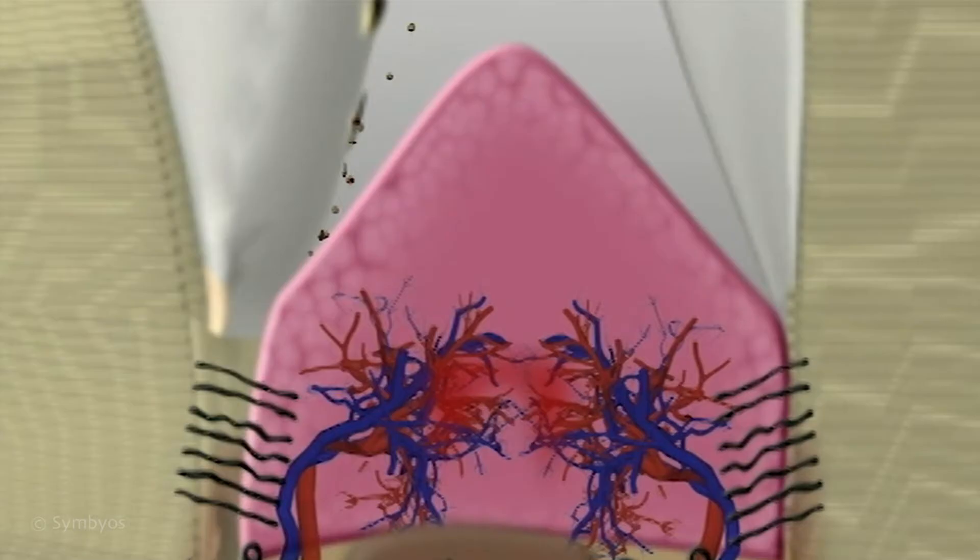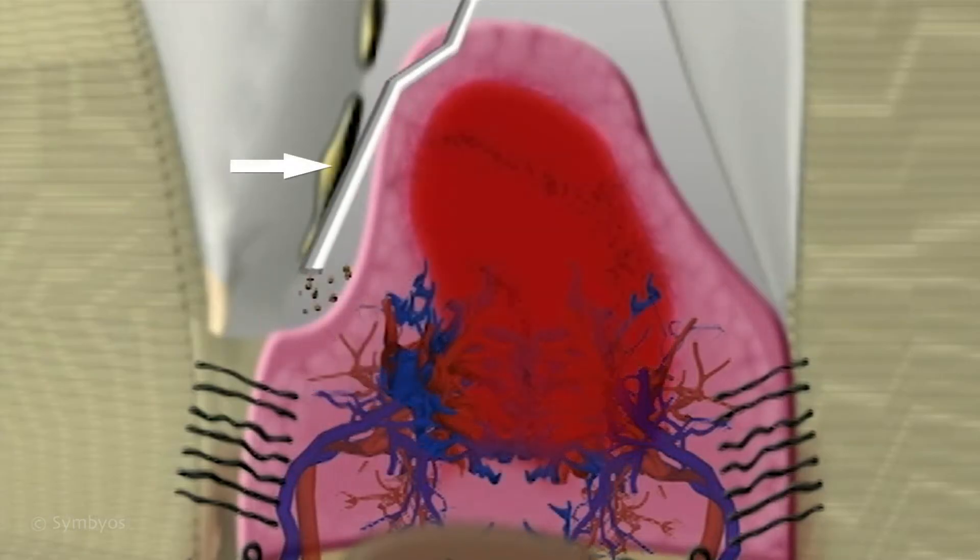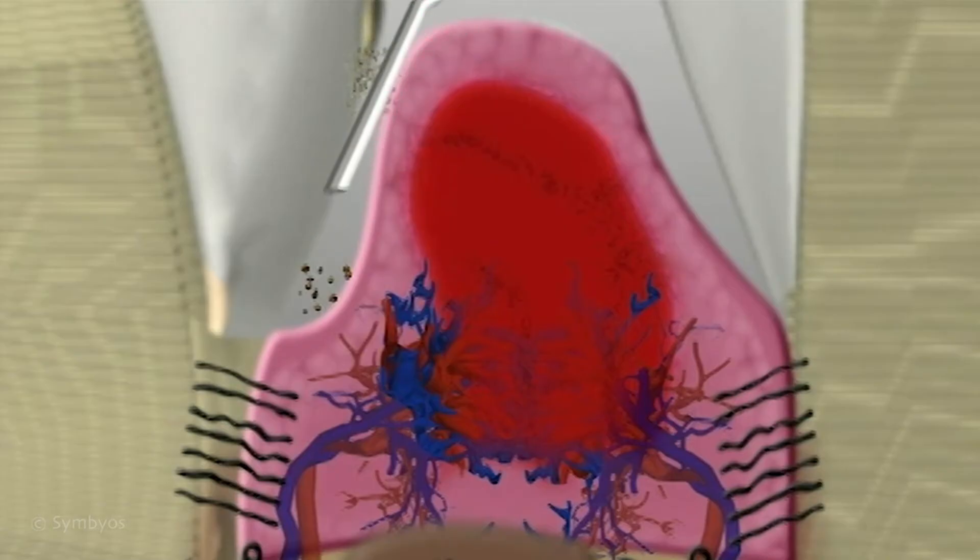Left in place on the teeth, bacterial plaque and biofilm begin to mineralize, forming hardened deposits called calculus, which can only be removed with dental instruments.